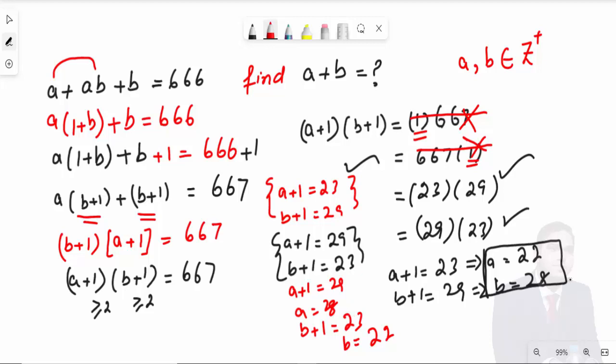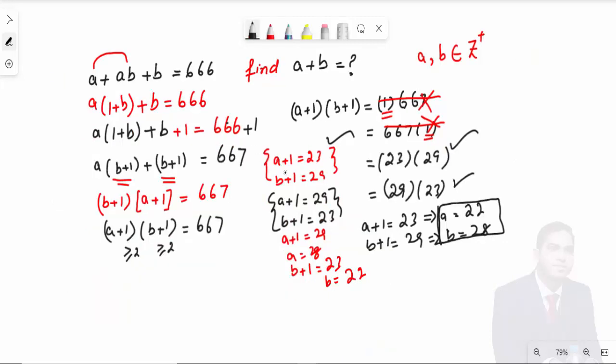In this case, we have to find a + b. In the first case, 22 + 28 = 50. In the second case, a + b = 28 + 22 = 50. So the answer of a + b is equal to 50.